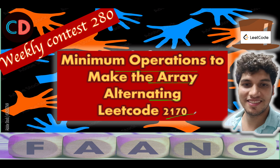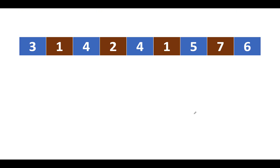I've taken a slightly longer example to give a good hold of the concept. The elements are 3, 1, 4, 2, 4, 1, 5, 7, 6. We want every alternate element to be equal — all the blue elements should be the same value and all the brown elements should be the same value. Also, the value chosen for blue and brown should not be equal to each other.